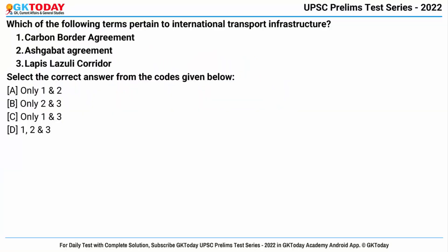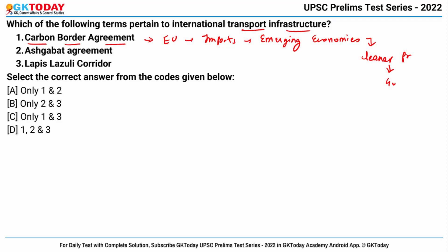Question number one: which of the following terms pertain to international transport infrastructure? The first term is carbon border agreement. The European Union is imposing a carbon border tax on imports in order to force emerging economies to adopt cleaner, non-fossil-fuel-based practices to manufacture their goods. This is conceived as a means to nudge developing countries to adopt less carbon-emitting means of production, but developing countries including India are opposing it.